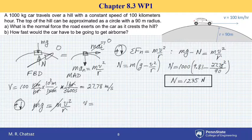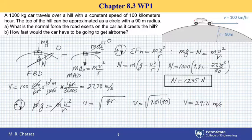If I solve for v, I have square root of gr. So v equals to square root of 9.81 times the radius of 90. And this is equal to 29.71 meters per second.